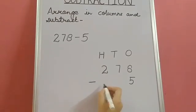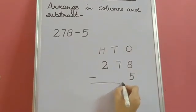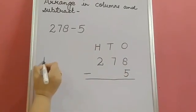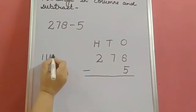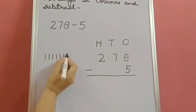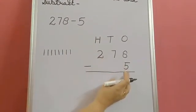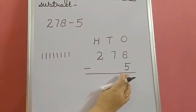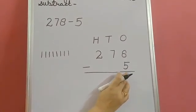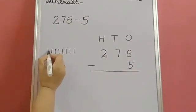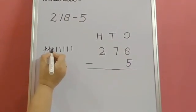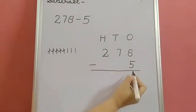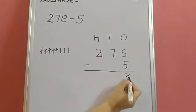Now we will subtract. 8 minus 5. Draw 8 lines. 1, 2, 3, 4, 5, 6, 7 and 8. And how many you have to subtract? Subtraction means to take away. How many you have to take away? You have to take away 5. So cross 5. 1, 2, 3, 4 and 5. How many are left? 1, 2 and 3. So 3 ones.